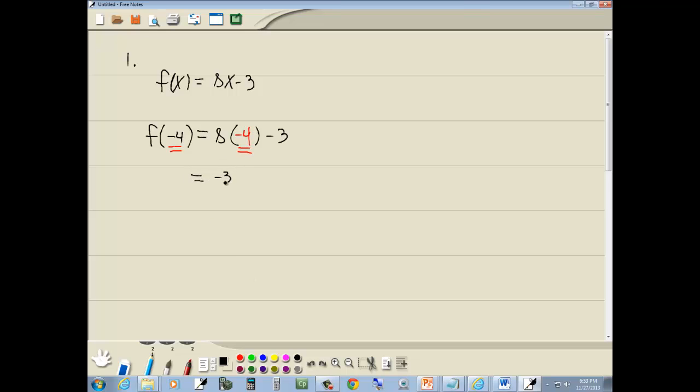Well, 8 times negative 4 gives us negative 32 minus 3. Negative 32 and negative 3 gives us negative 35. And that's our answer.